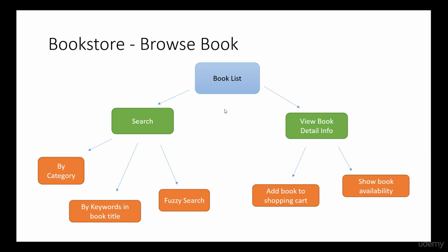The next module is Browse Book. We provide a list of books with general information such as the cover picture, title, page count, and a brief summary. Users can search for books by category, by keywords in the book title, or do a fuzzy search matching any words appearing in the title, author's name, or description.